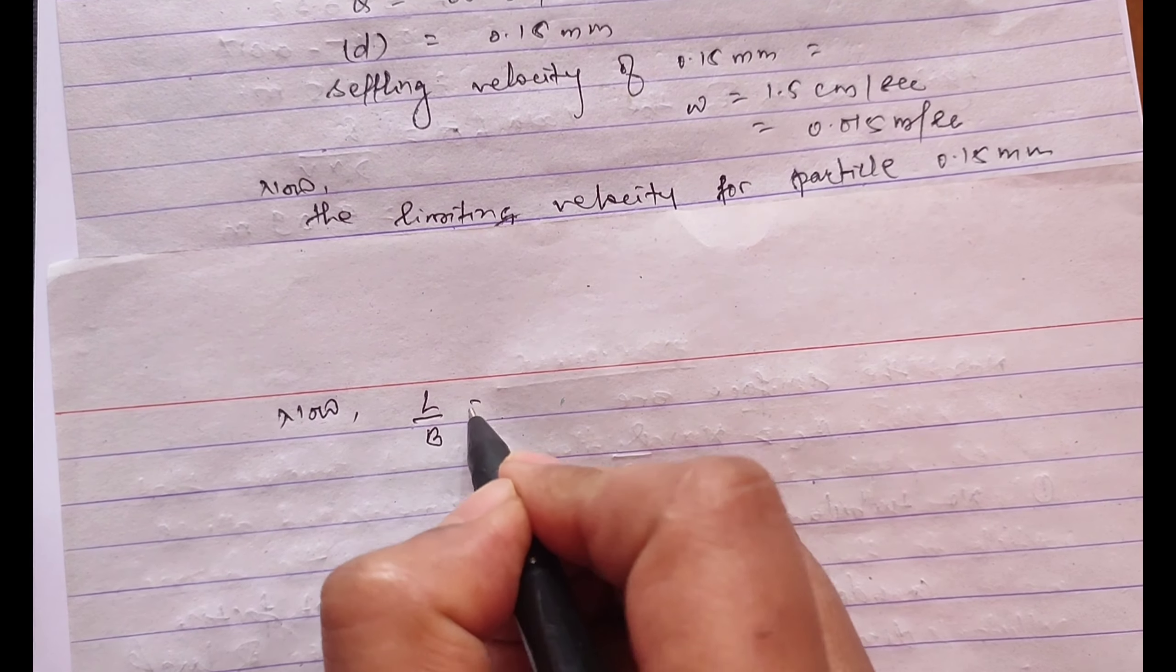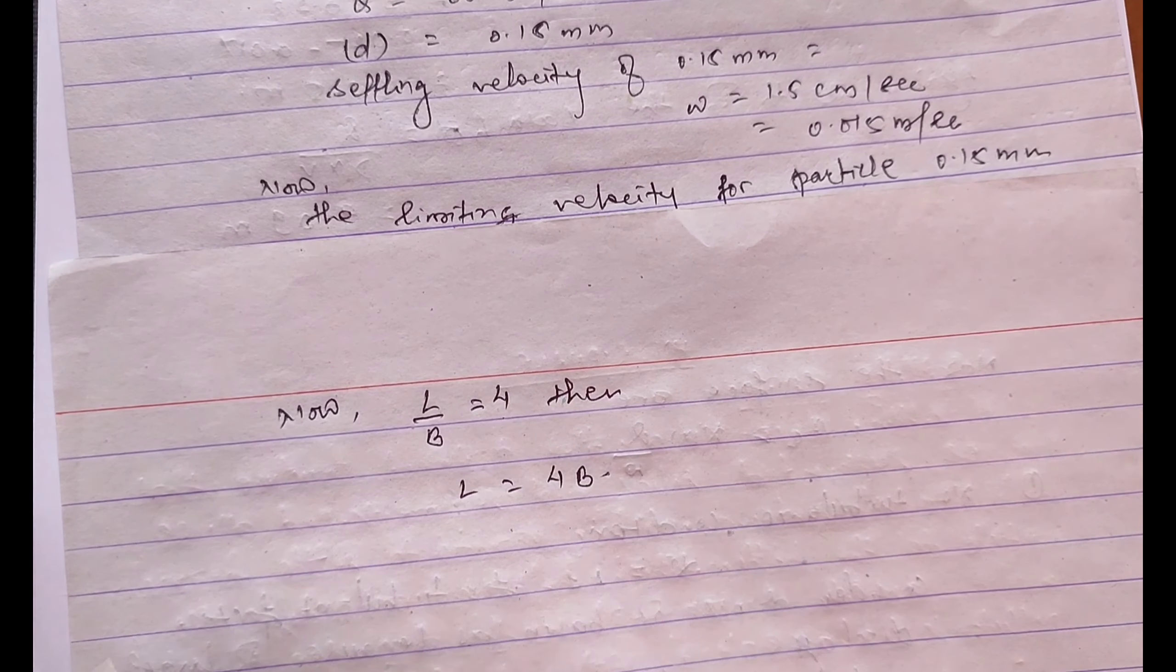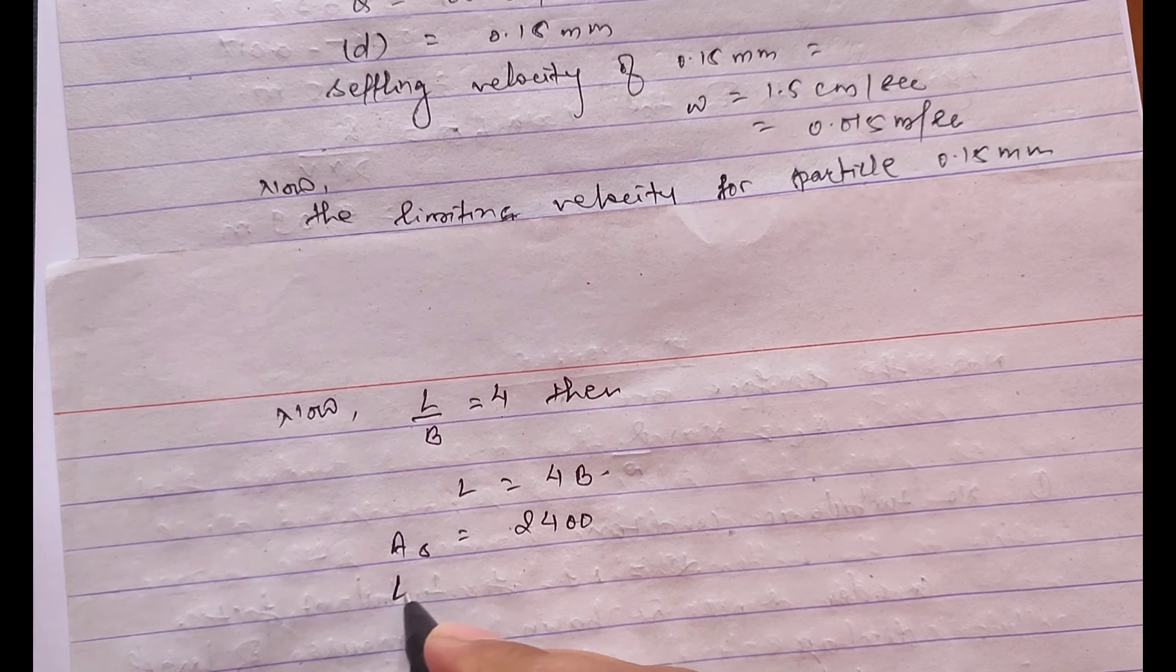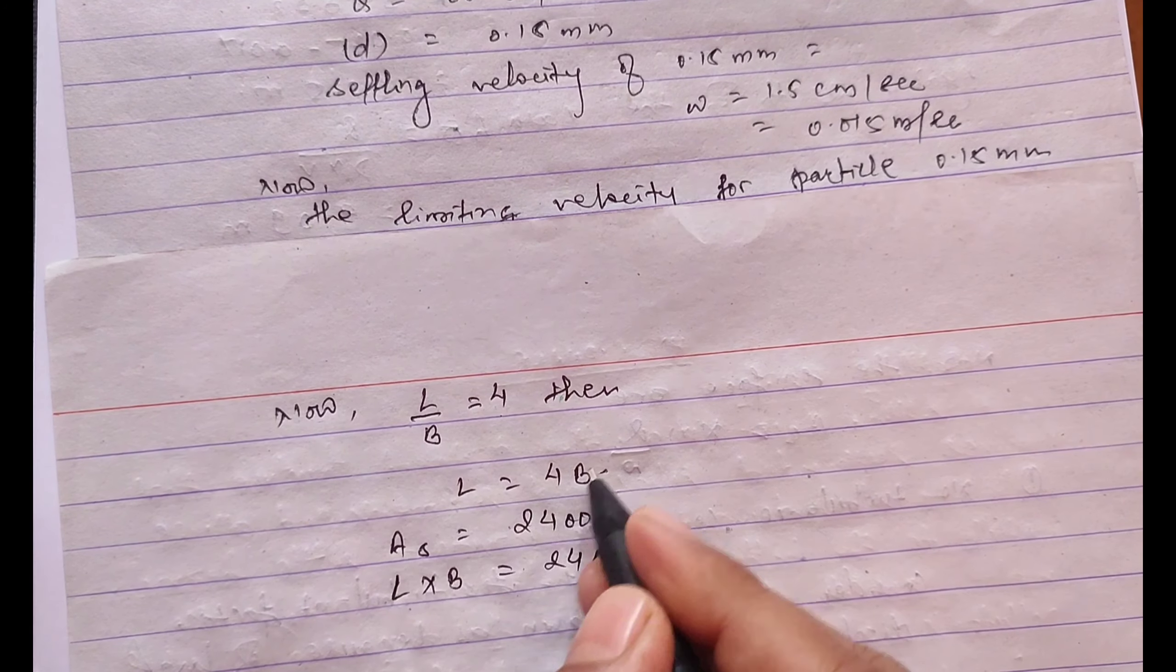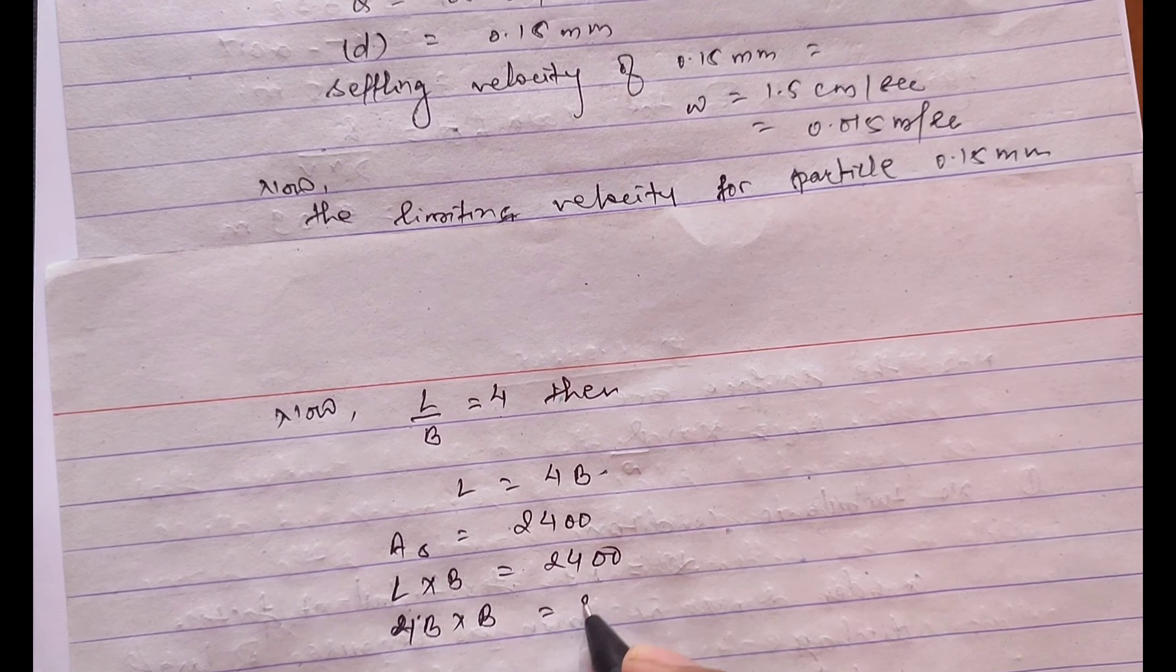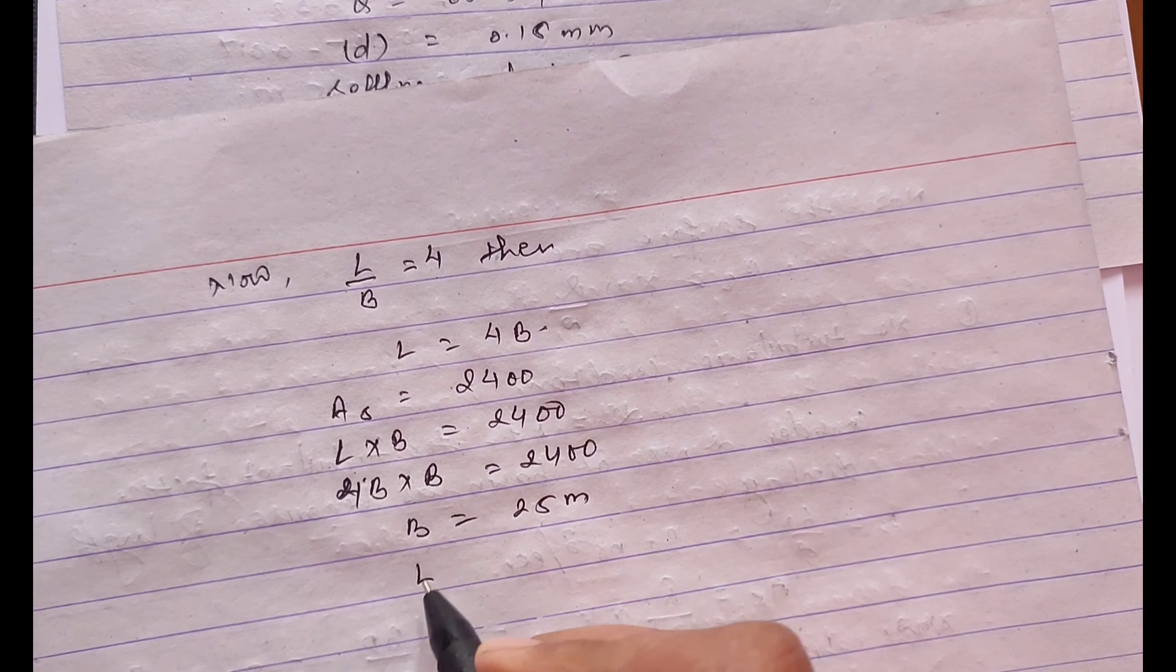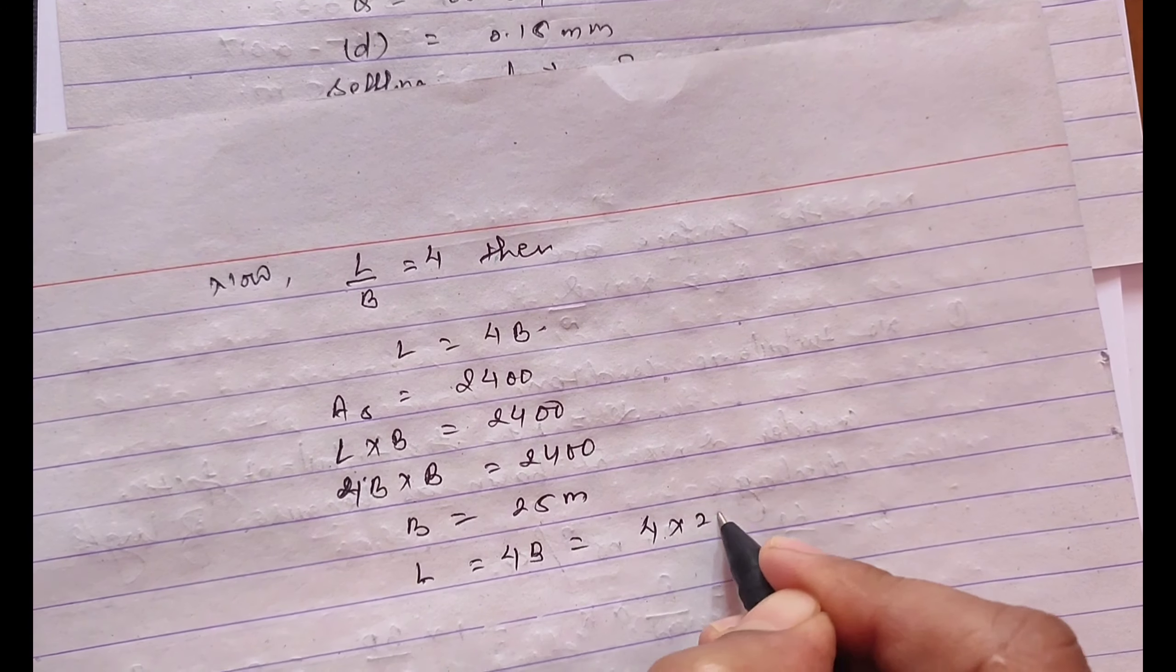Now taking the L by B ratio is 4, then the value of l equals 4 times b. The surface area a is calculated as 2400, where the surface area a means l times b equals 2400. As we know the value of l is given as 4 times b, so b equals 2400 divided by 4, that is b equals 25 meter. And the value of l placing this value of b equals 4 times 25 equals 100 meter.